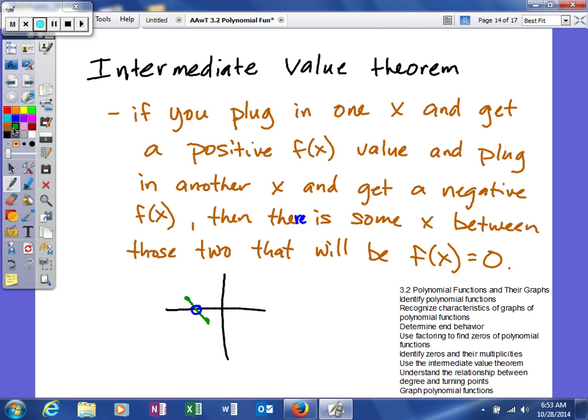It doesn't matter if you start with a positive value or a negative. If you plug in some x and get a negative, then plug in another x and get a positive, somewhere in between those two, there has to be a value that crosses the x-axis.